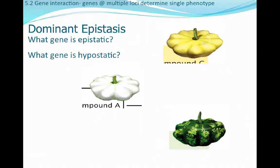It's important to keep in mind the distinction between epistatic and hypostatic genes in the squash example. The epistatic gene does the masking — that is the W allele at the first locus — and the Y allele at the second locus is the hypostatic gene, the one that is covered up or masked.